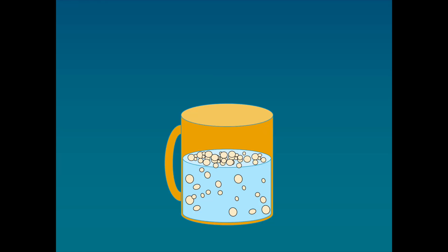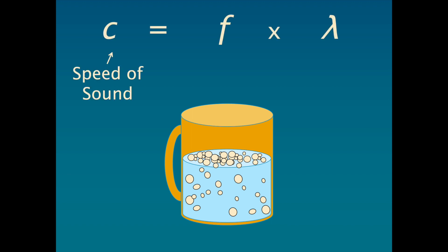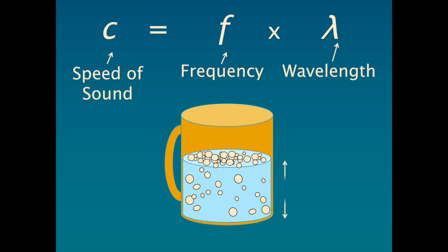One way of calculating the speed of sound is to multiply the frequency of a sound wave by its wavelength. We use C to represent the speed, F for the frequency, and the Greek letter lambda for the wavelength. The tone of the sound is generated by the liquid and the length of the column of it in the glass.